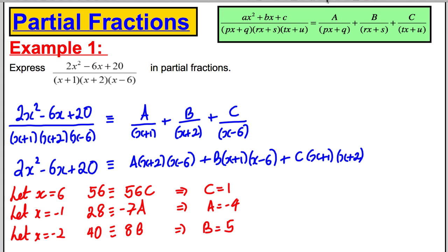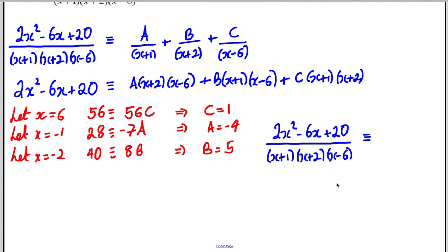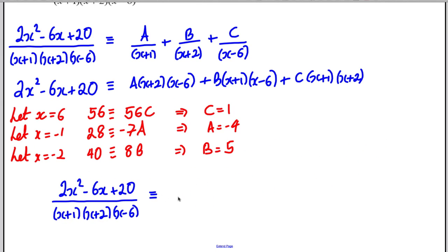Okay, and therefore we could write our final answer here. We would write it in another line. We would rewrite this here. We would therefore say that this here is therefore equal to the following: it's equal to -4/(x + 1) + 5/(x + 2) + 1/(x - 6). And we've written in partial fractions.